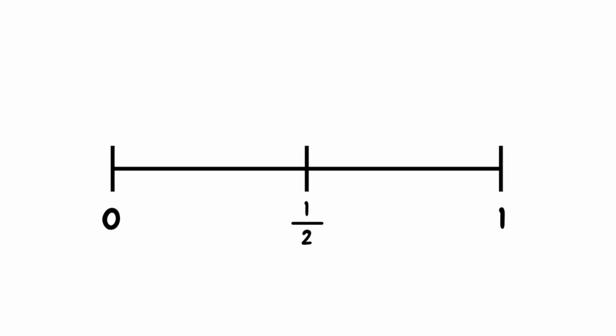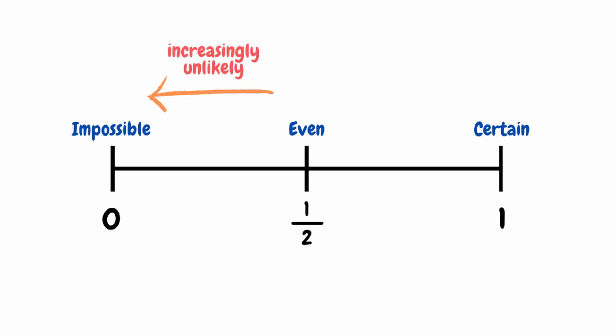These events can range from a probability of 0, which we call impossible, all the way up to a probability of 1, which we call certain. We then have a fraction of 1 half in the middle, which we call even probability. As we come down the scale from even to impossible, we get probabilities that are increasingly unlikely, and on the other side, from even to certain, probabilities that are increasingly likely.